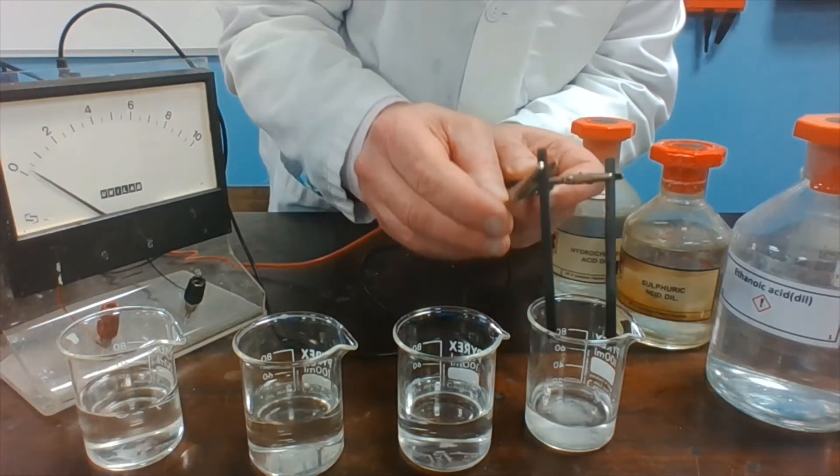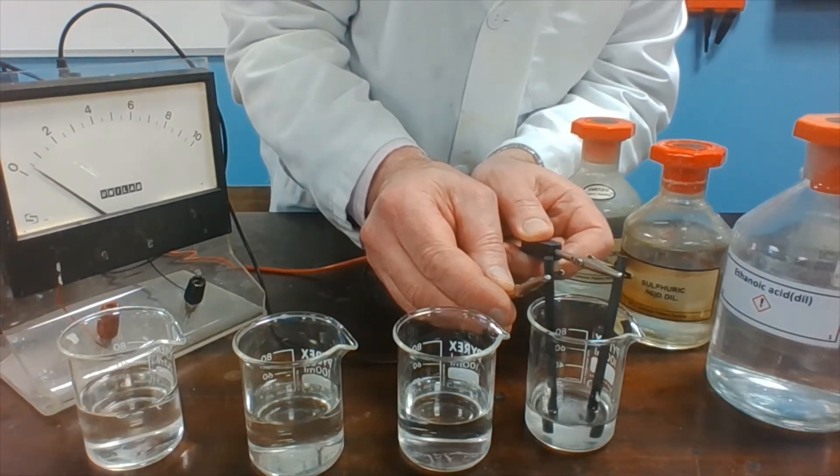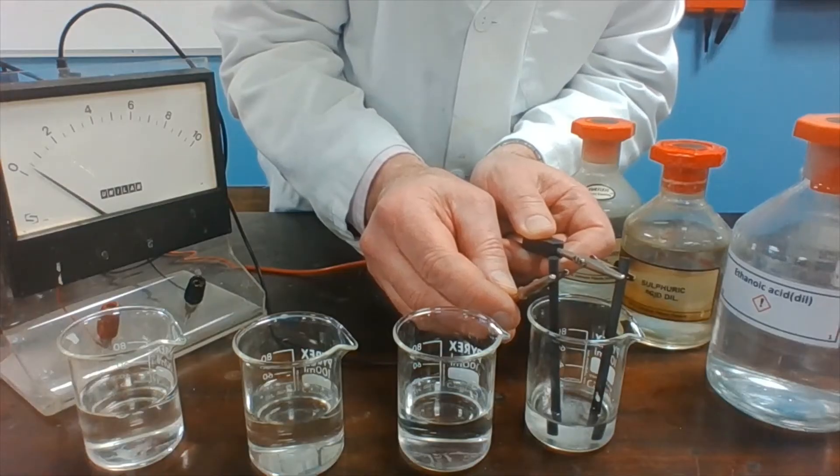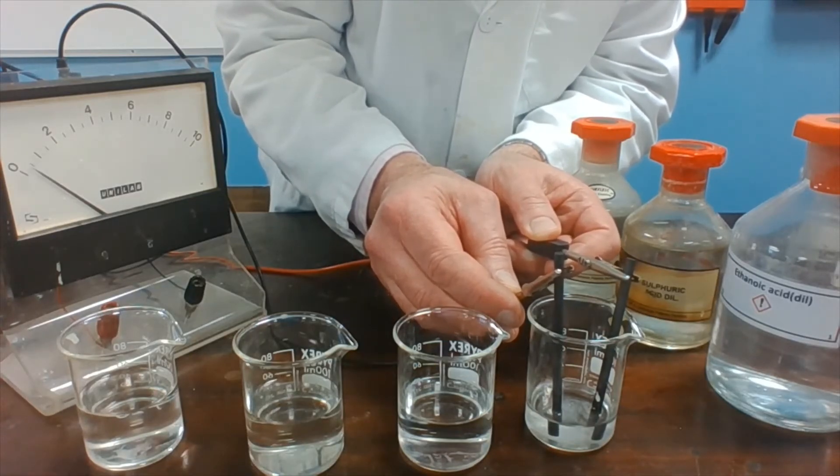You might see a very slight movement on the ammeter. So it is conducting very, very slightly. And again, you might just begin to see some bubbles of gas coming off at the electrodes.